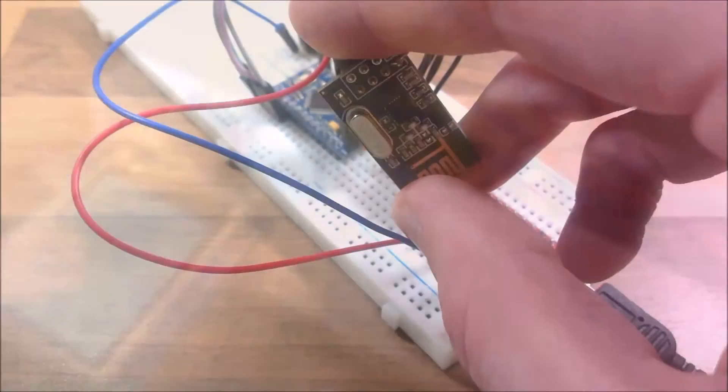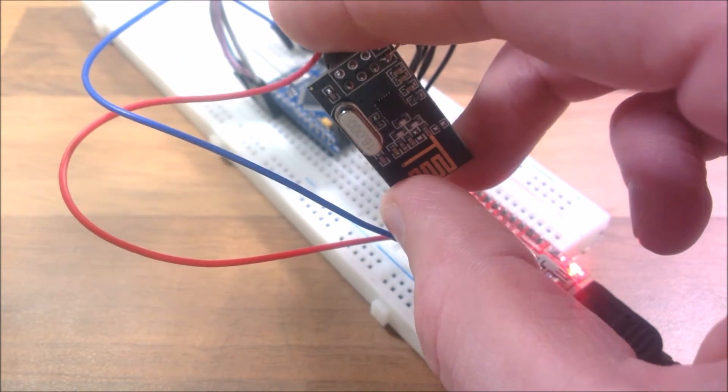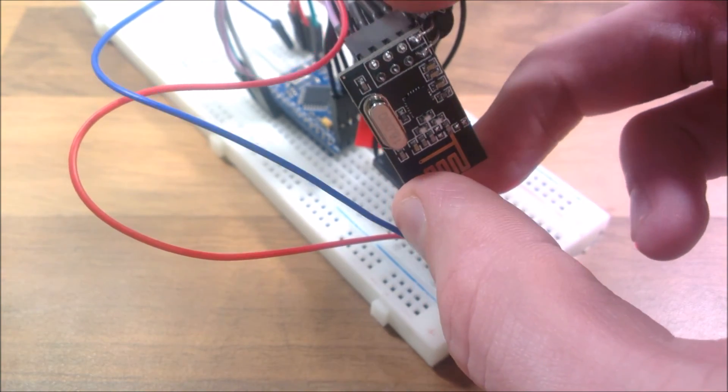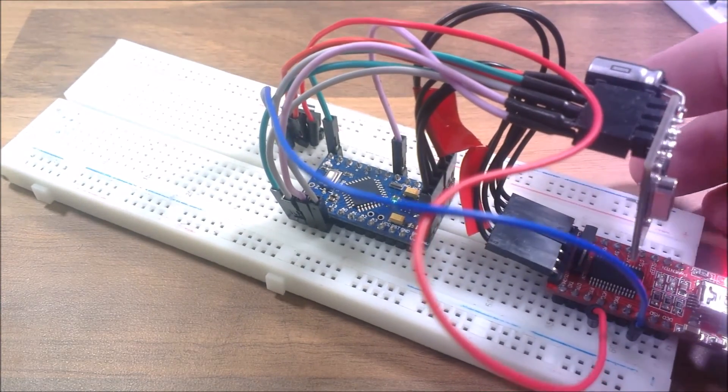I'll show you the transmitter now. There we go, it's just a transceiver wired up as a primary transmitter, and this is just transmitting data to the receiver.